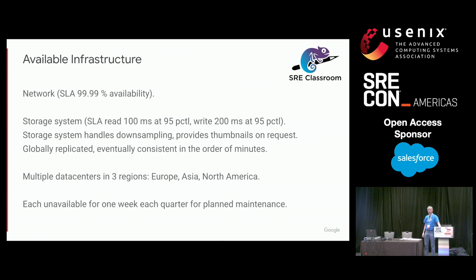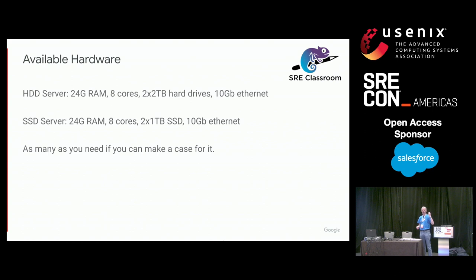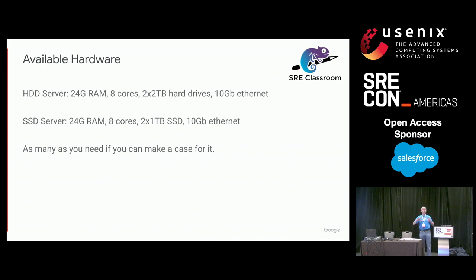In the data centers, there are two kinds of machines. First, machines with hard disks: 24 gigs of RAM, eight cores, two two-terabyte hard disks, and 10 gigabit Ethernet. Second, SSD machines: 24 gigs of RAM, eight cores, and two one-terabyte SSDs with the same 10 gigabit Ethernet. The data centers are very large — you can use as many machines as you want. However, at some point someone has to pay for them, so keep the number as low as you can.